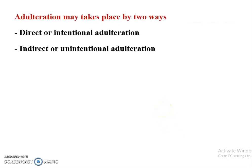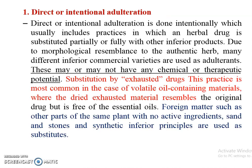Adulteration may take place in two ways. The first is direct or intentional adulteration; the second is indirect or unintentional adulteration. Direct or intentional adulteration is done deliberately and usually includes practices in which an herbal drug is substituted partially or fully with other inferior products. Due to morphological resemblance to the authentic drug, many inferior commercial varieties are used as adulterants. This may or may not have any chemical or therapeutic potential.